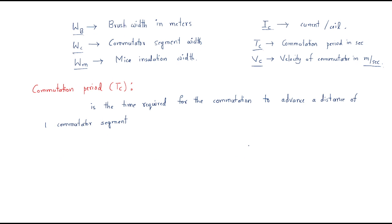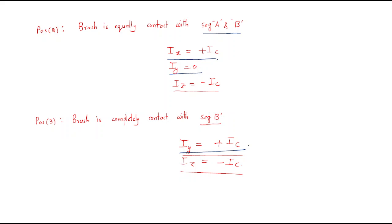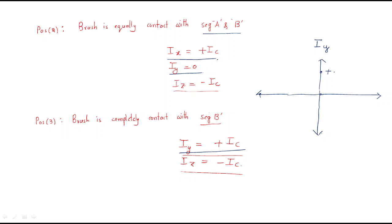We need to discuss position three clearly — how the current across the Y conductor behaves. Observe the current vs. time graph: the maximum current is +IC and the minimum current is −IC.